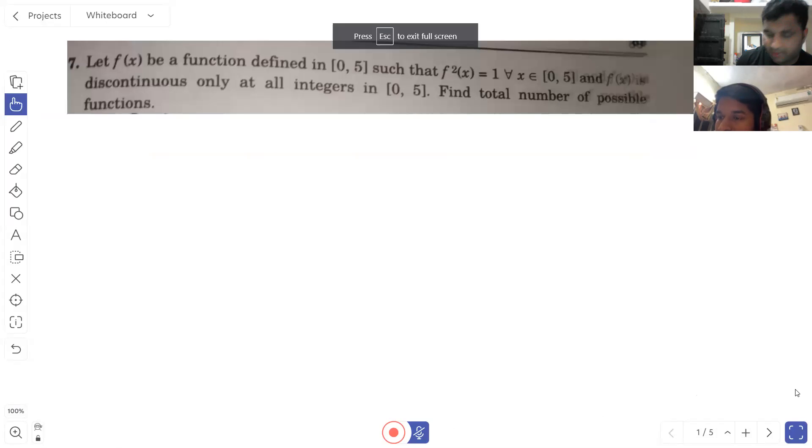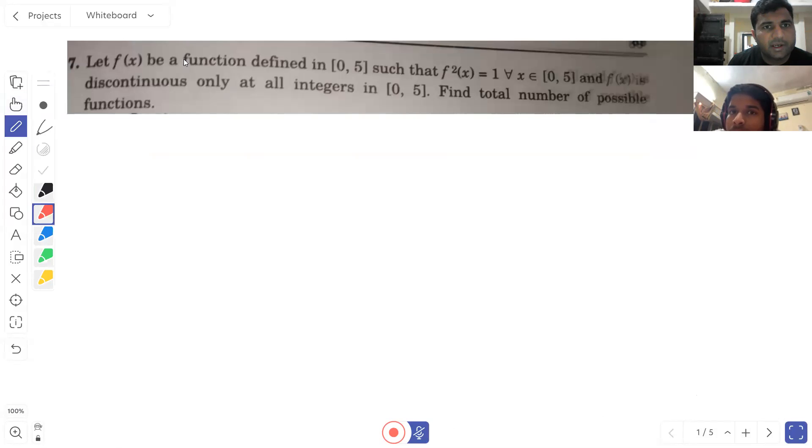First of all, you have a problem with me recently. First question: Let f(x) be a function defined in [0, 5] such that f²(x) = 1 for all x belongs to [0, 5].